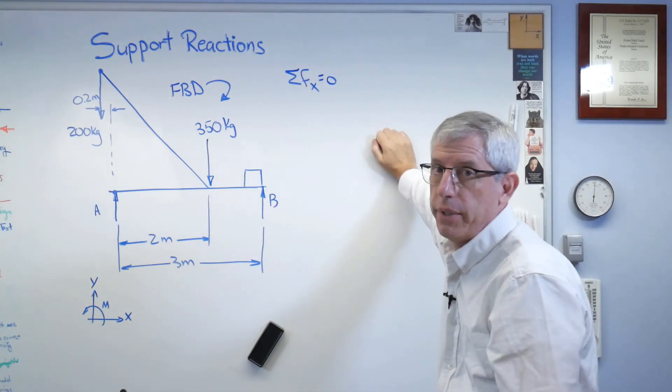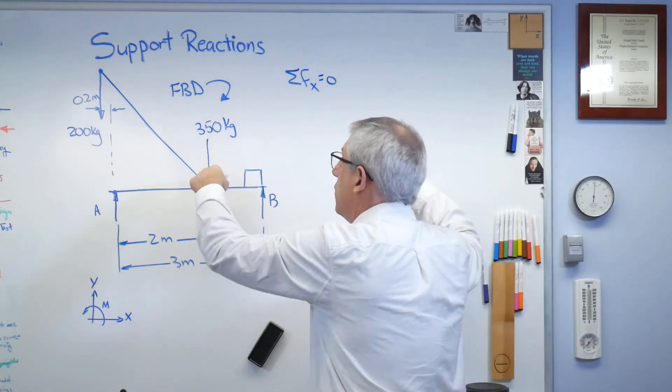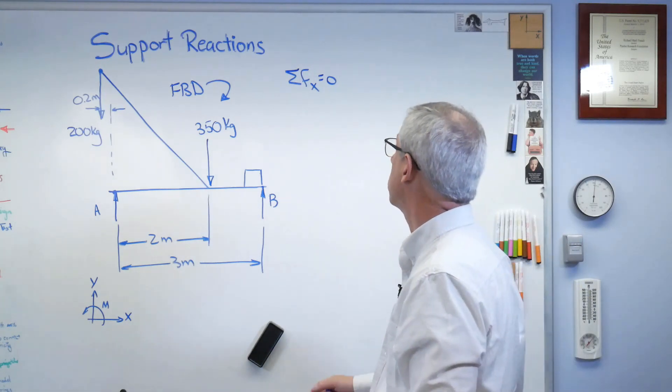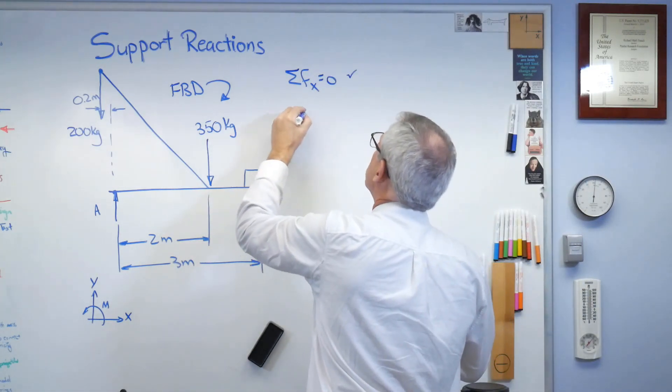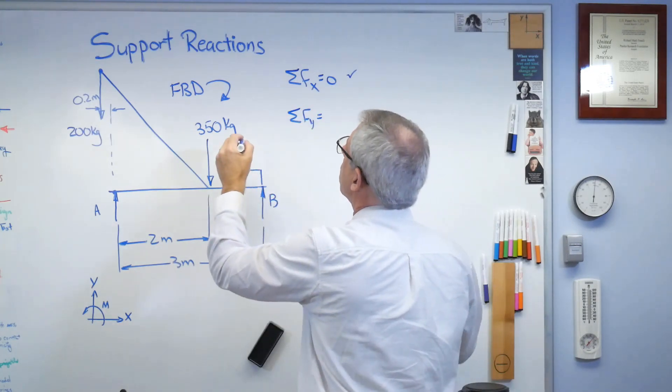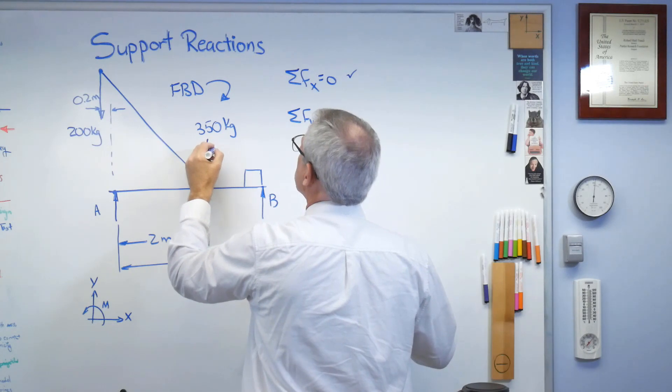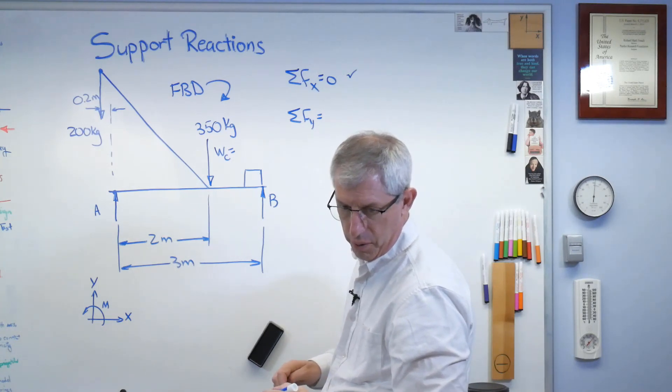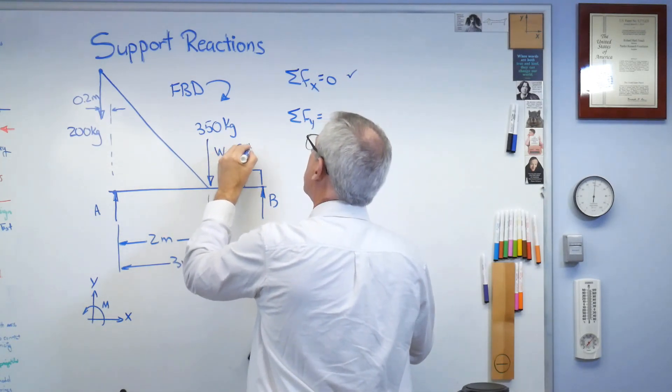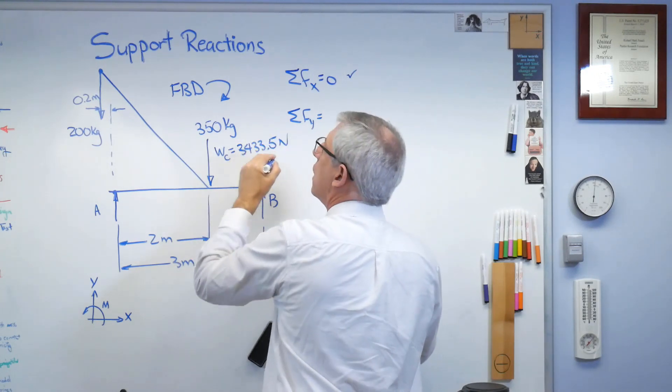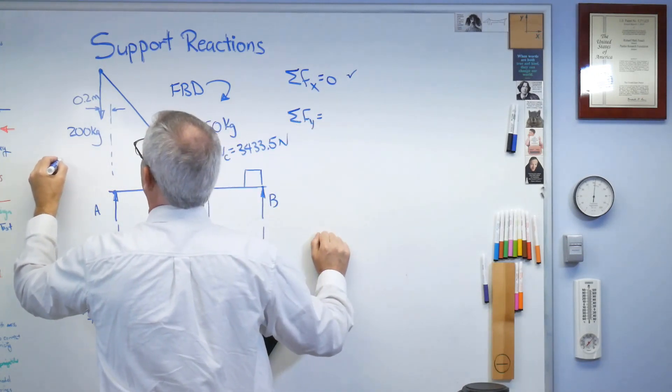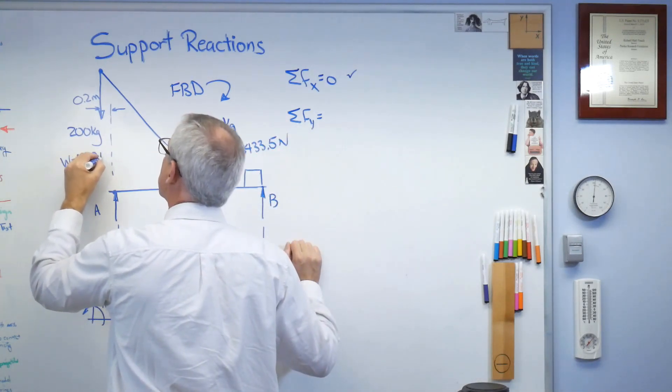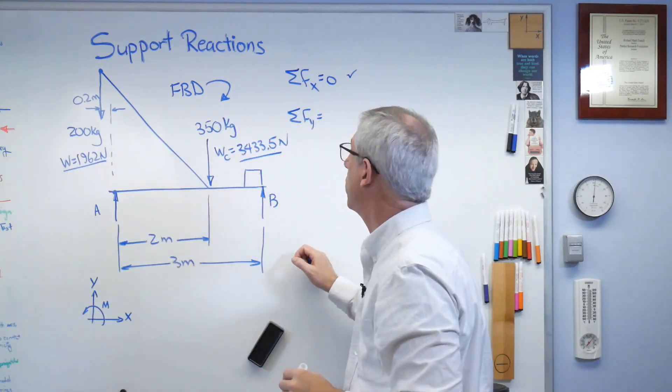So sum of the forces in the X direction equals zero. Well, there aren't any. Now, are there internally? You bet there are. But the structure as a whole, there's no forces on it in the X direction. So that was easy. Forces in the Y direction. Well, let's see. We've got to turn this into a weight. So let's call this weight of the crane. And let's see, I got my little cheat sheet down here. It's 3433.5 Newtons. And I'll call this just weight because that's what we're trying to lift. And that's 1,962 Newtons.